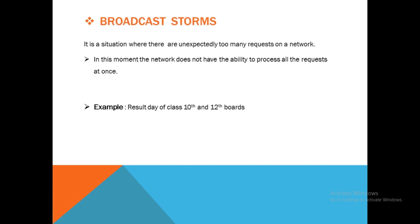The second cause is broadcast storms. This is a situation where there are unexpectedly too many requests on the network, and the network does not have the ability to process all the requests at once. For example, on the result declaration day of class 10th and 12th, there is too much traffic on the websites because too many people are searching for their results on the internet. That causes broadcast storms.